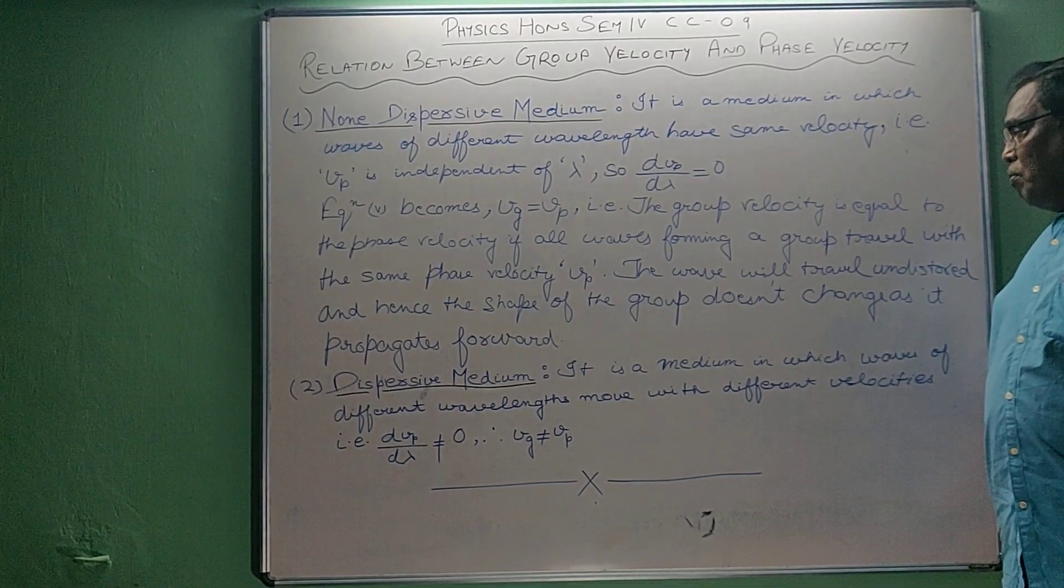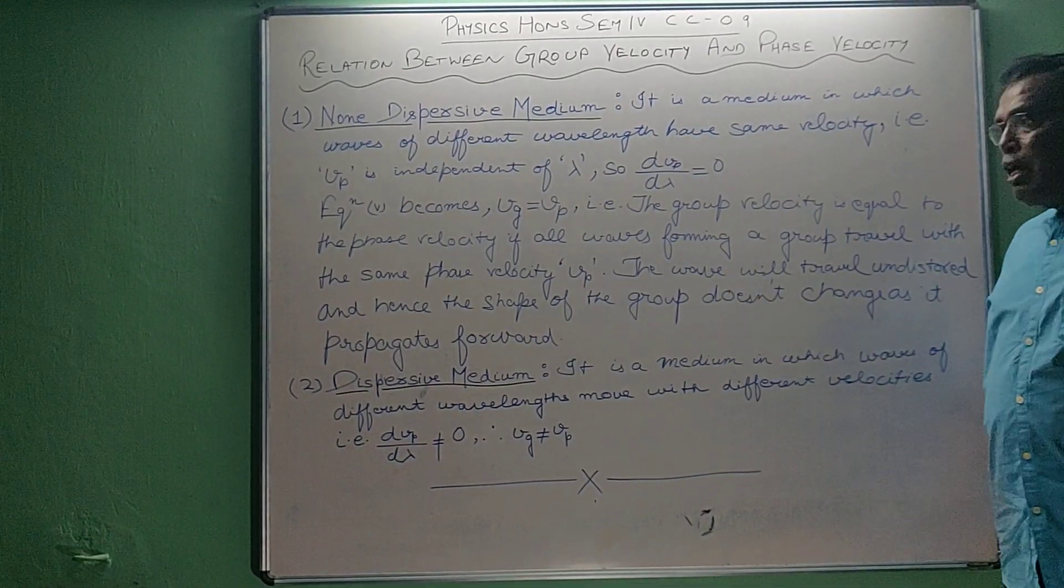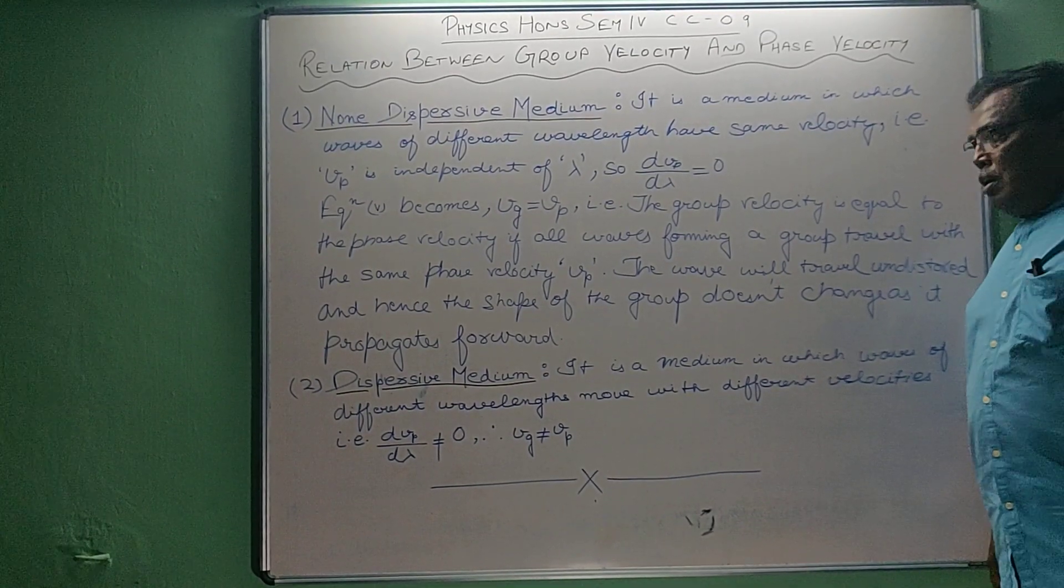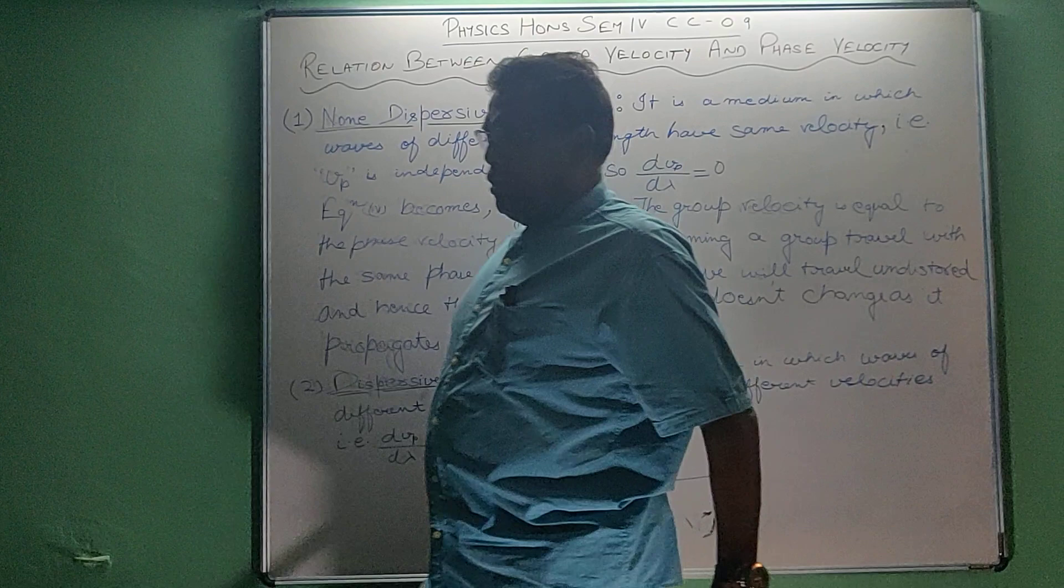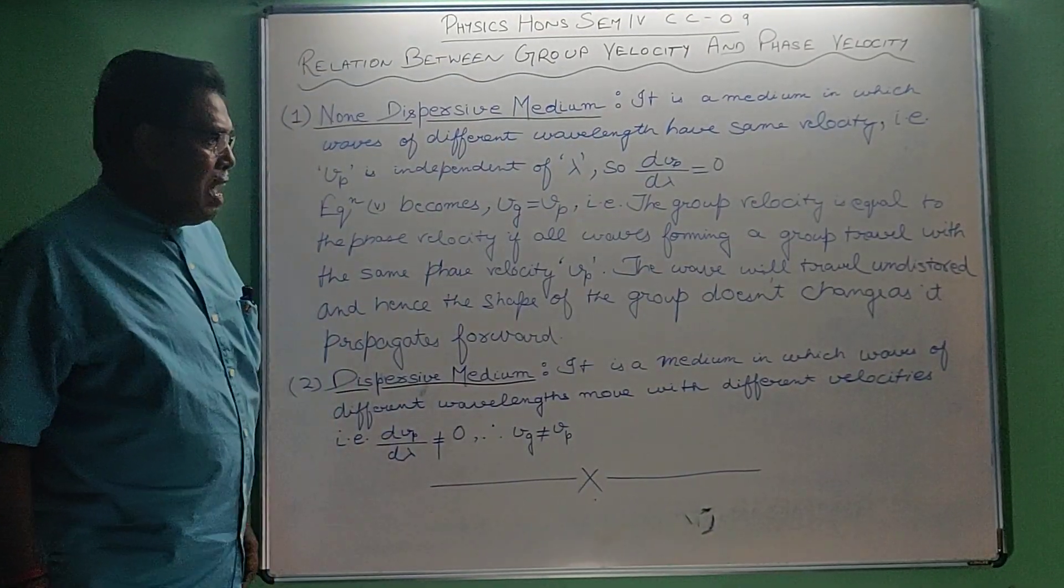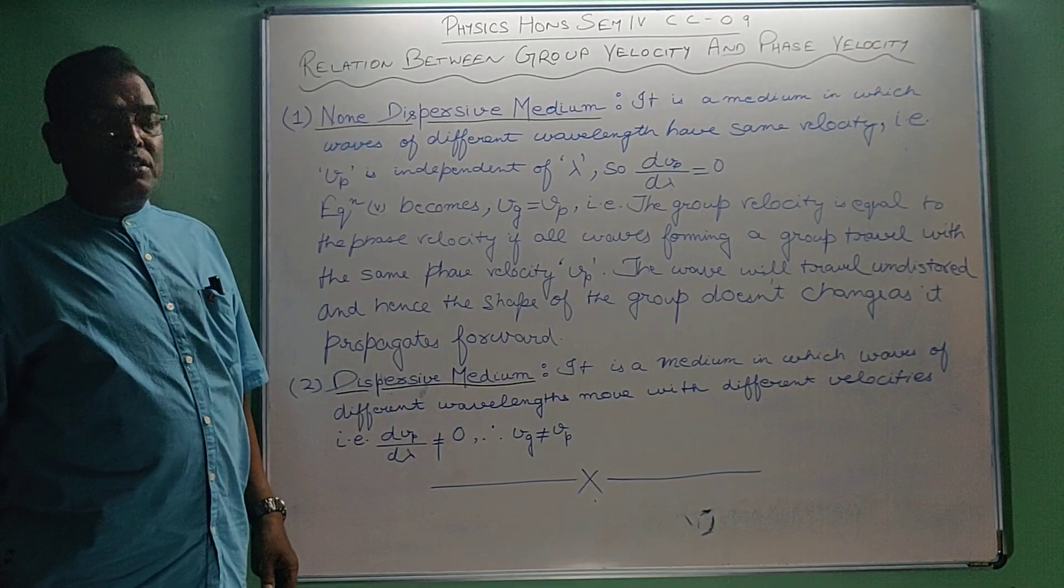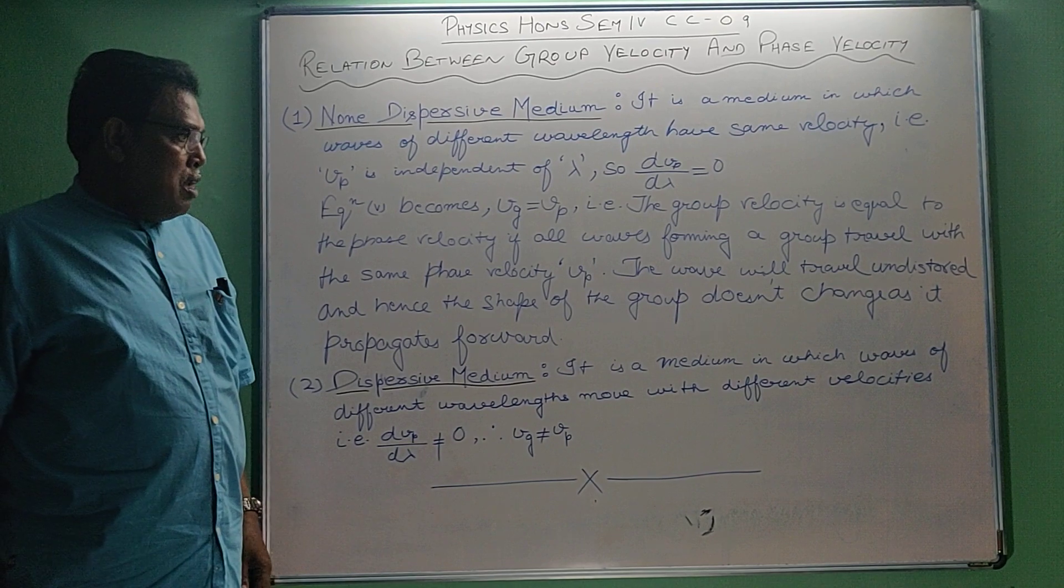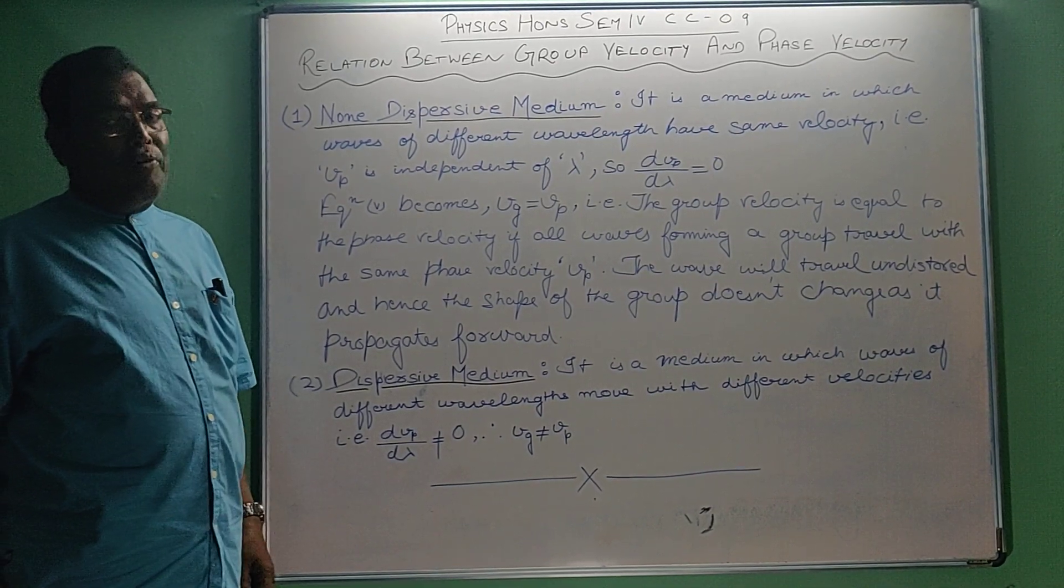If all waves forming a group travel with the same phase velocity vp, what will happen? In this case, the wave will travel undistorted and hence the shape of the group does not change as it propagates forward.